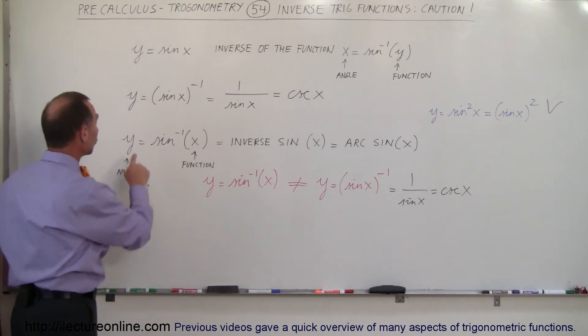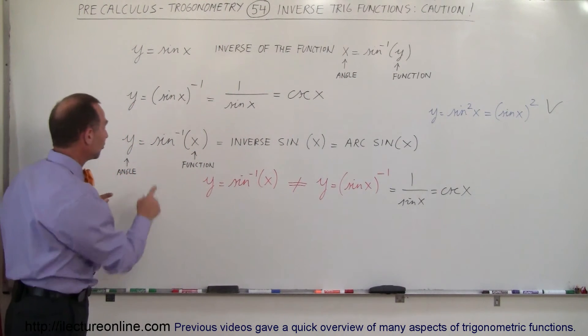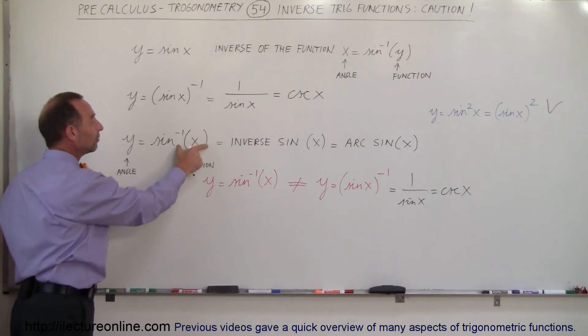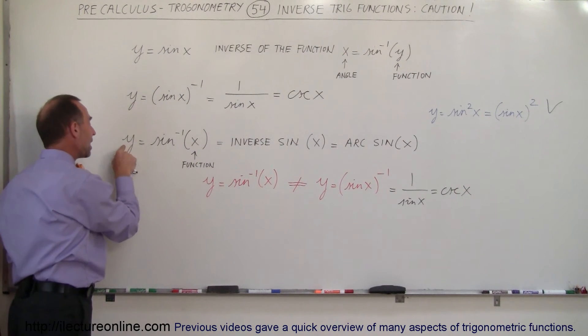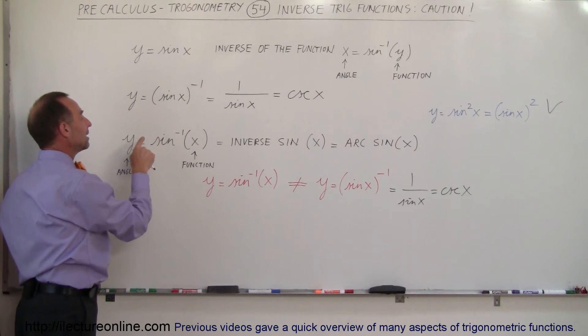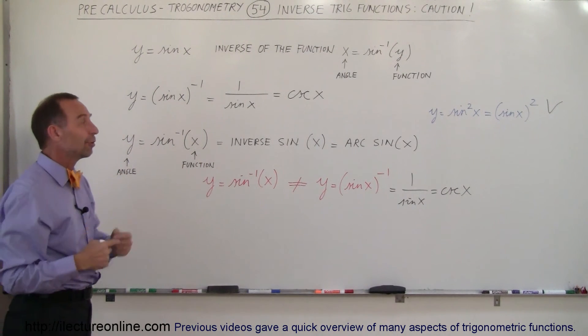Now notice here I used y and x there, and there I used x and y. It doesn't matter if you see sine to the minus 1 of this. This is always going to be the function and that's going to be the angle. I'm looking for the angle so that if I take the sine of that I'll get this as a result. That's what we mean by the inverse.